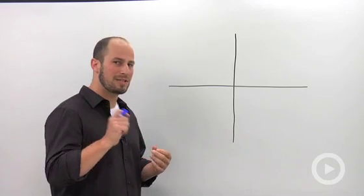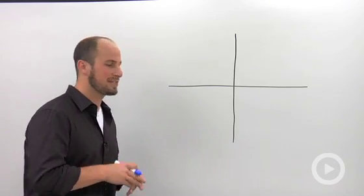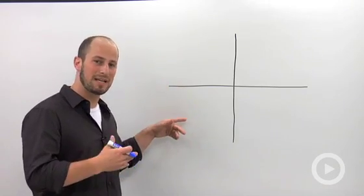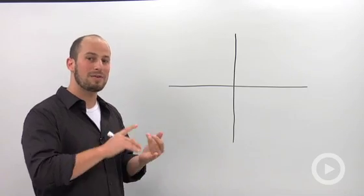What we have to remember in doing this is that the only way a graph is going to be able to change from positive to negative is at a zero or at an asymptote.